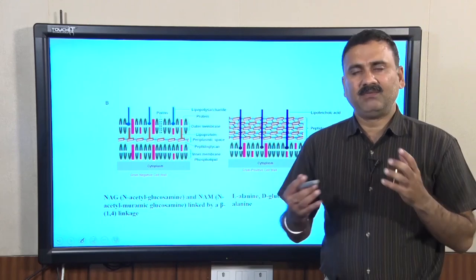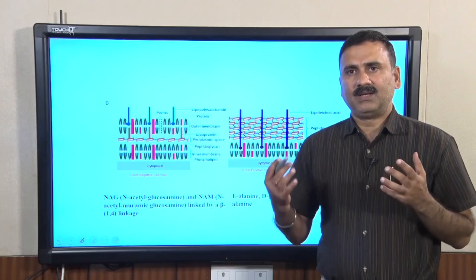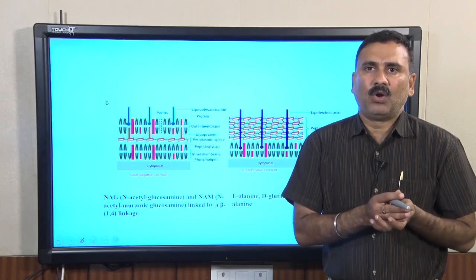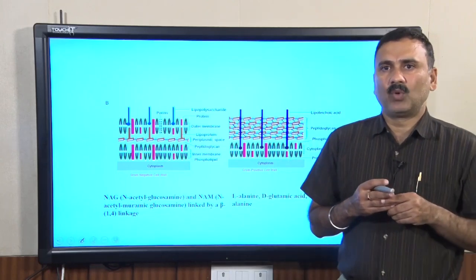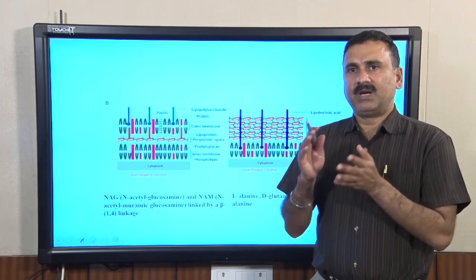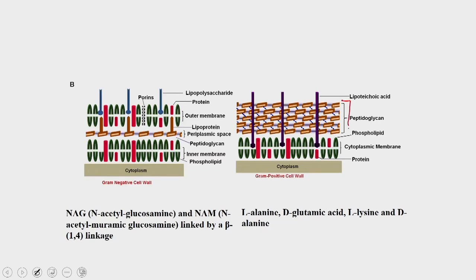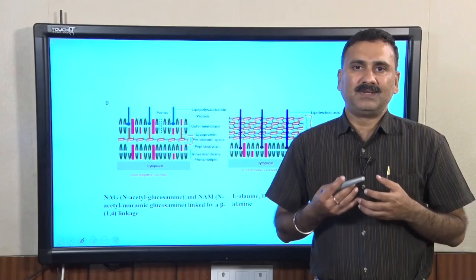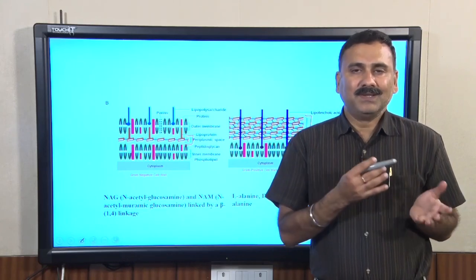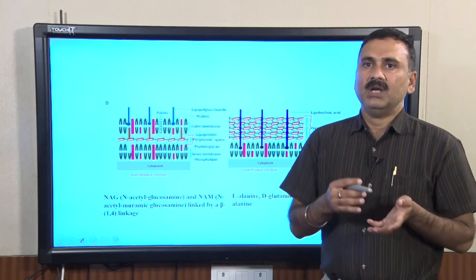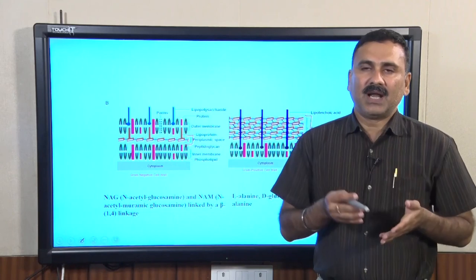Summarizing the contrasting features between gram-positive and gram-negative bacteria cell walls: gram-positive bacteria have a thick layer of peptidoglycan, whereas gram-negative bacteria have a very thin peptidoglycan layer. These differences can be exploited by stains that work on the presence of the peptidoglycan layer, and these stains can be used to distinguish between gram-positive and gram-negative bacteria.